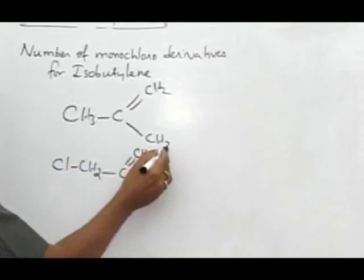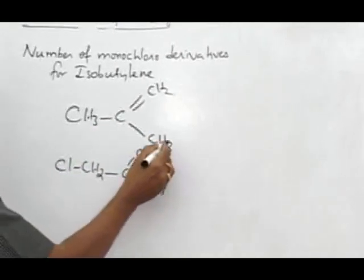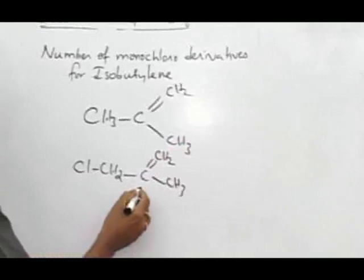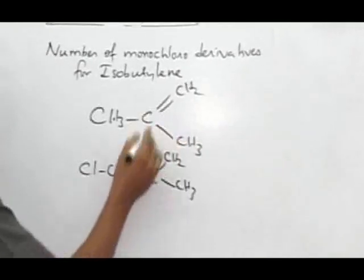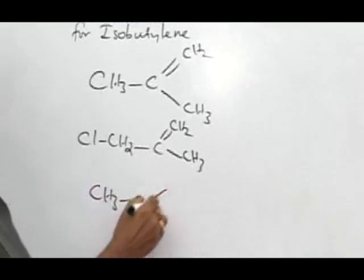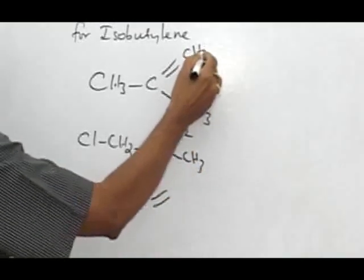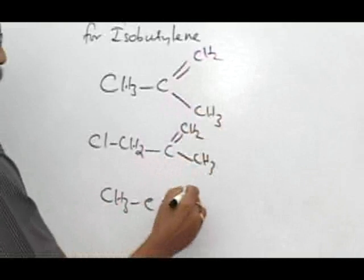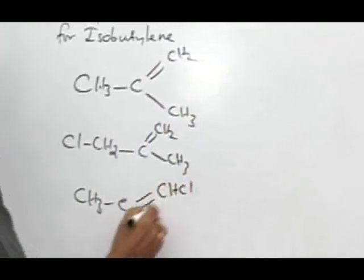Now if you remove a hydrogen from this methyl group, there is nothing but the same structure. And now one more derivative is also possible. That is CH3, C, double bond, from this carbon, hydrogen is removed. That is CHCl, CH3.